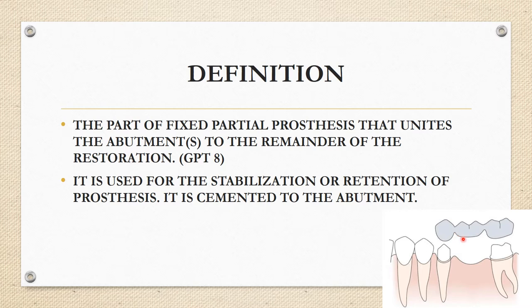The pontic is the one replacing the denture space, and the two retainers go and sit on the abutments. These retainers unite the abutment to the rest of the restoration. The part that connects the pontic and the retainer is known as the connector. The retainer is used for stabilization or retention of the prosthesis.